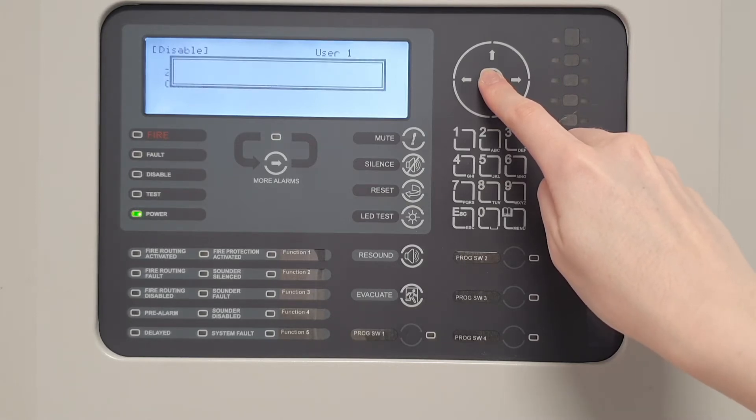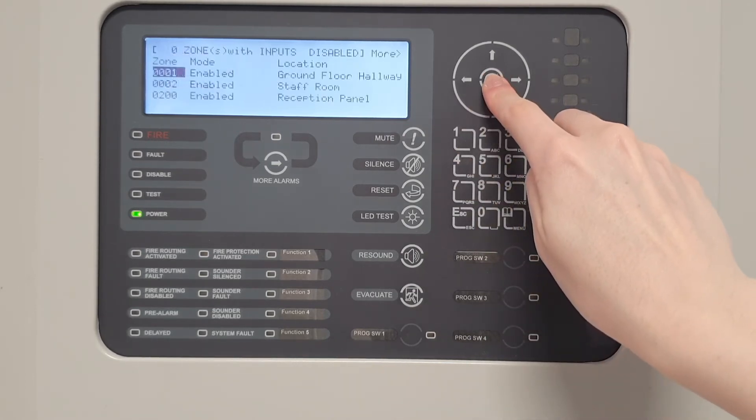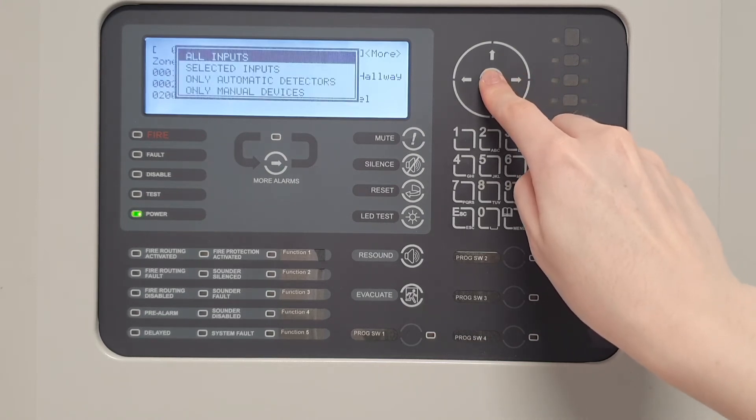You may be prompted for a password to access this menu. The default is 7654. Once in this menu, scroll down to the desired zone, then press tick and choose which inputs from the list. All inputs will disable all inputs within that zone.